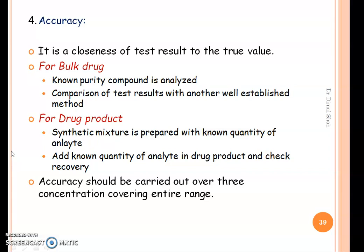Accuracy is also called as closeness of test result to the true value. For bulk drug, accuracy can be ascertained by analyzing a compound of known purity. The second way of doing accuracy for bulk drug is comparison of the test result with another well-established method. For a drug product, accuracy study is performed by preparing a synthetic mixture with a known quantity of analyte and then it is analyzed for the percentage recovery.